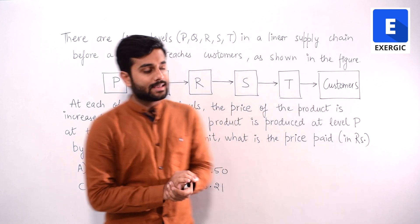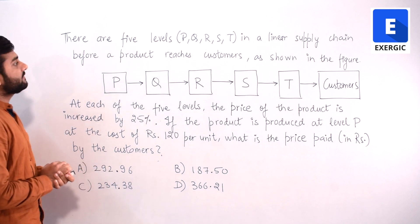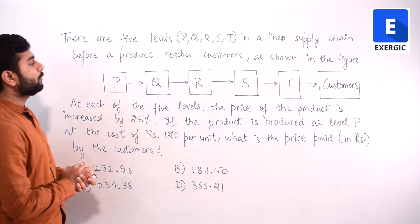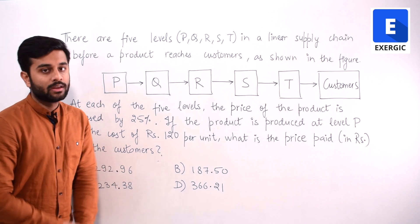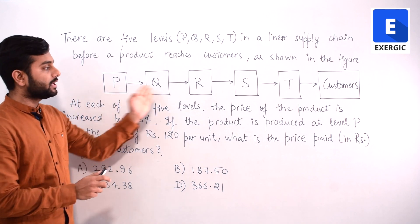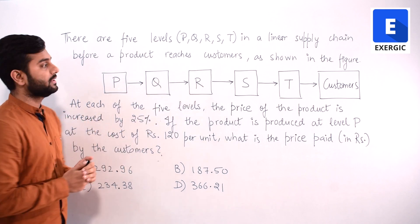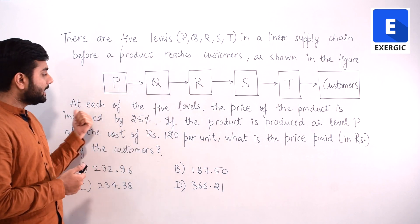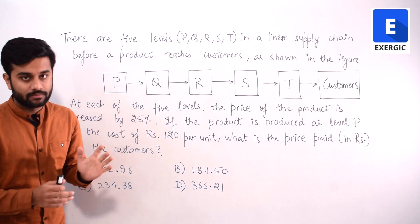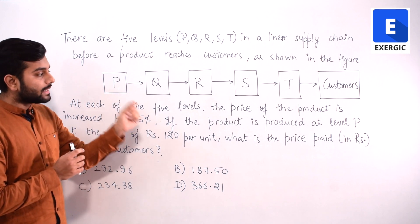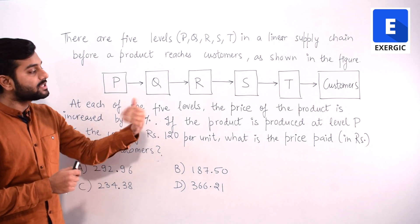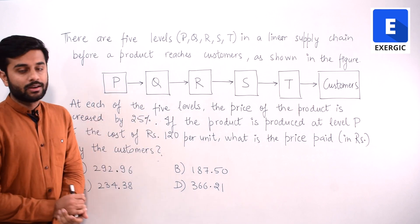The question says that there are 5 levels P, Q, R, S, T in a linear supply chain before a product reaches customers, as shown in the figure. At each of the 5 levels, the price of the product is increased by 25%. If the product is produced at level P at the cost of Rs. 120 per unit, what is the price paid in Rs. by the customers?